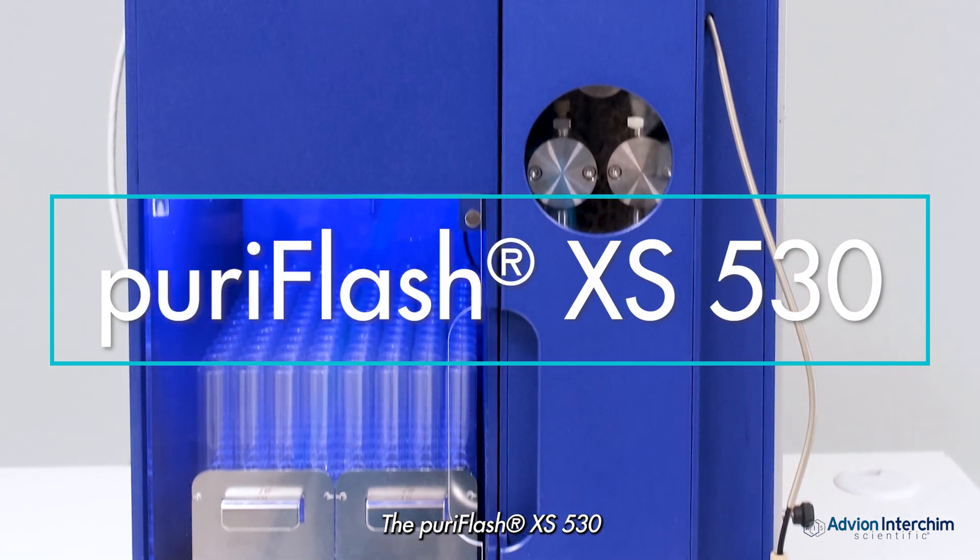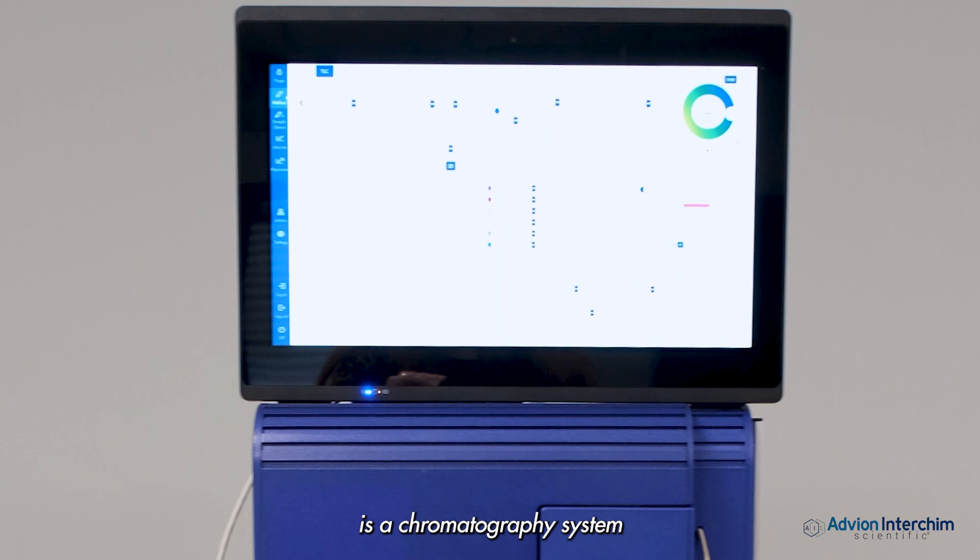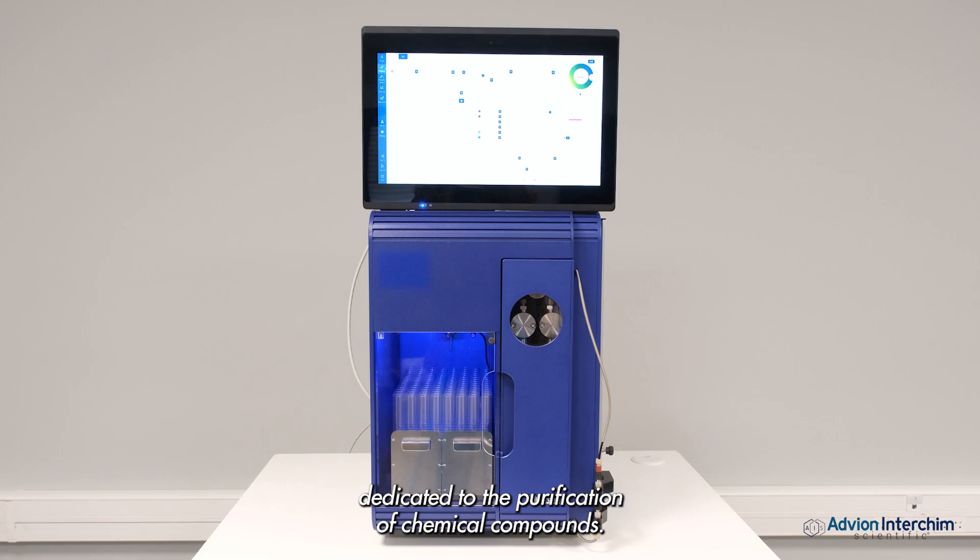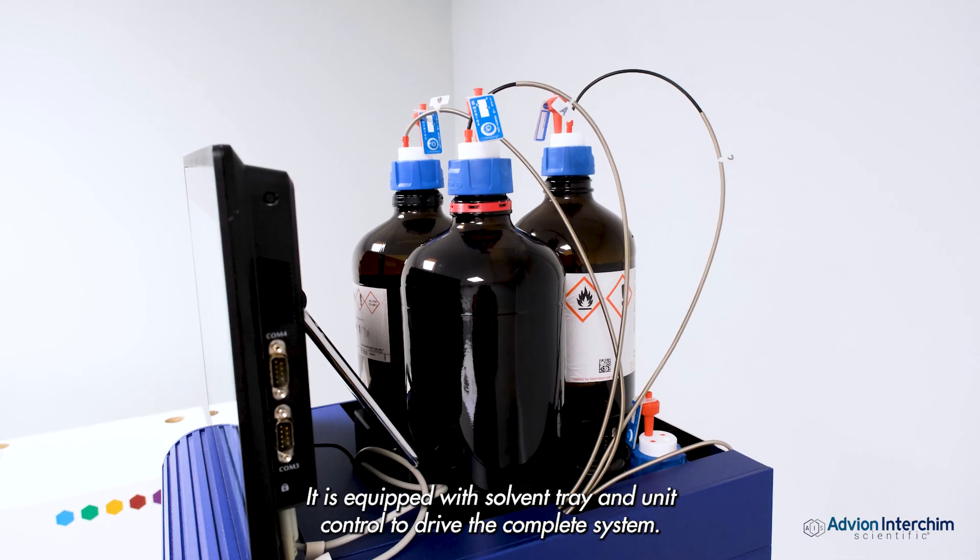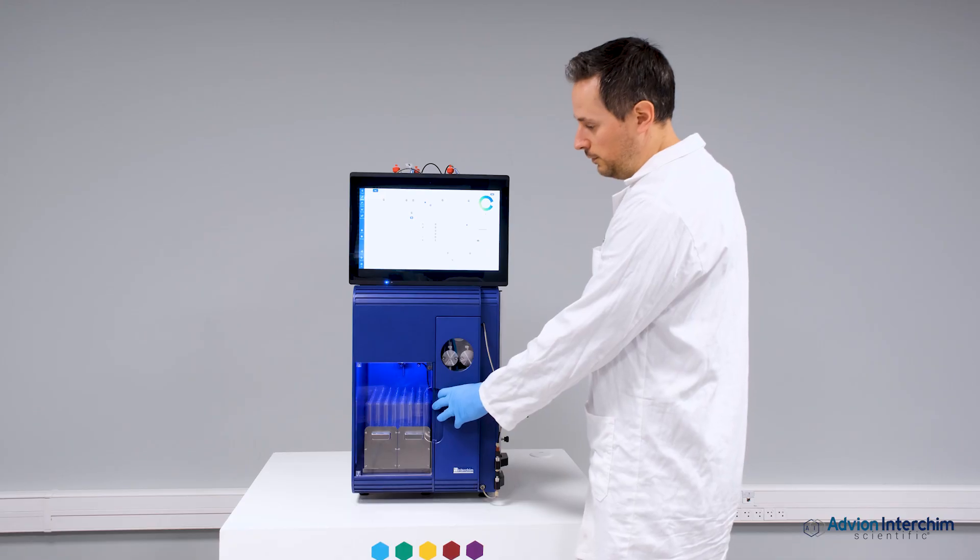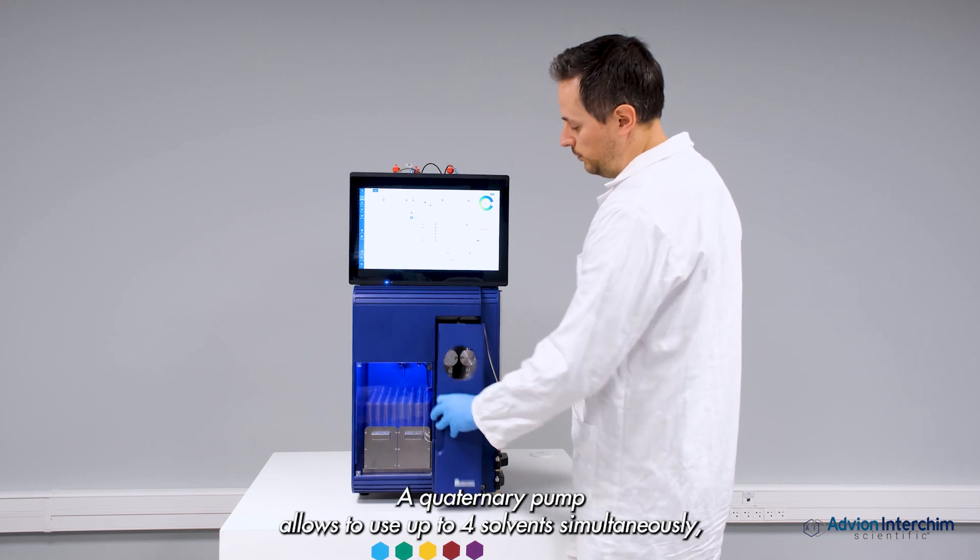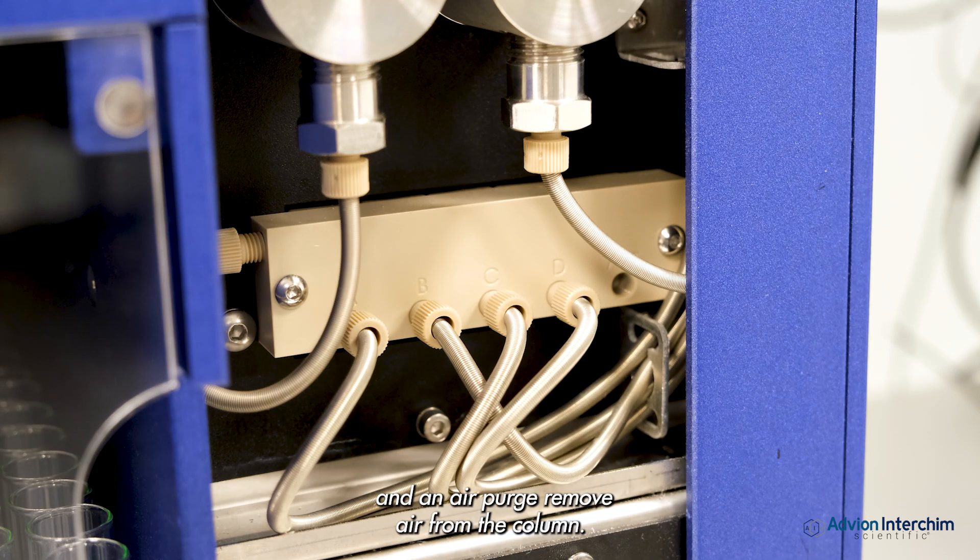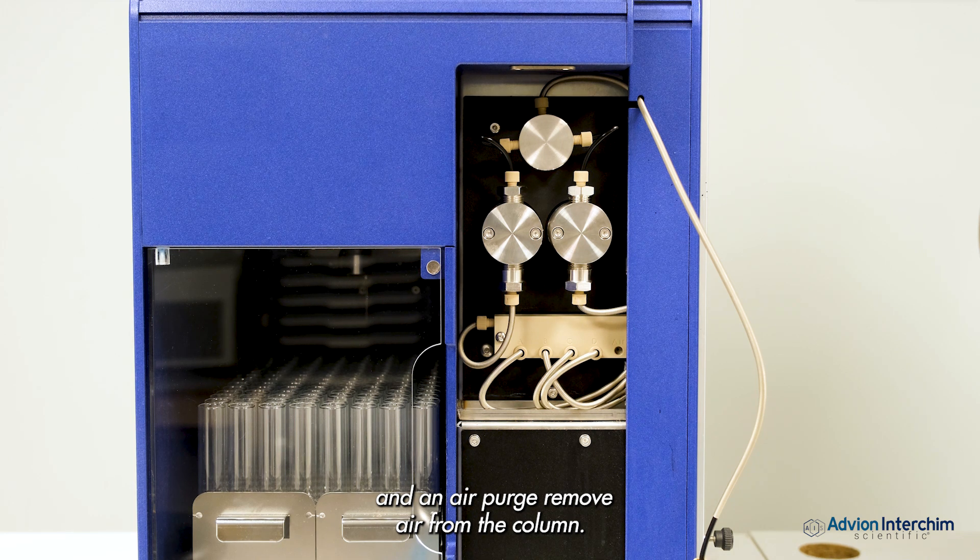The Puriflash XS530 is a chromatography system dedicated to the purification of chemical compounds. It is equipped with a solvent tray and unit control to drive the complete system. A quaternary pump allows the use of up to four solvents simultaneously, and an air purge removes air from the column.